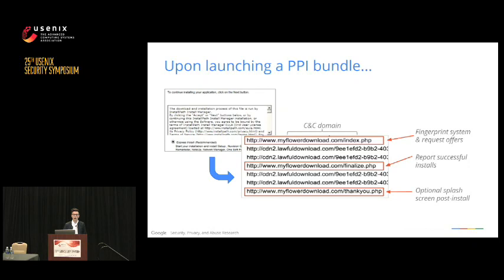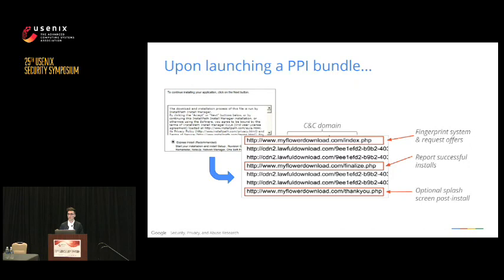To see who's buying installs, we acquired samples for each of the four PPI networks and launched them in a sandbox environment to observe what happens when the bundle launches. The express install option — where you get five to ten other bundled offers — is dynamic. At launch, it reaches out to a command-and-control server, provides a fingerprint saying 'I'm launching on this new system with these characteristics — who wants to be installed in this region?' The C&C responds with potential offers, displays them to the user, who may or may not consent. Successful installs are reported back, and an optional thank-you screen may show more software to download.